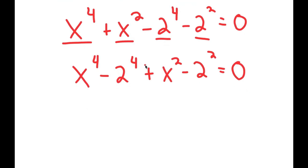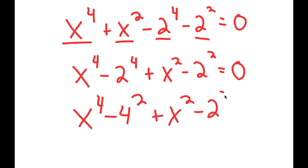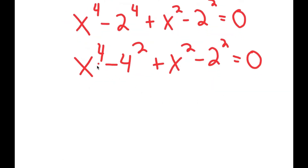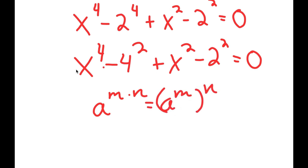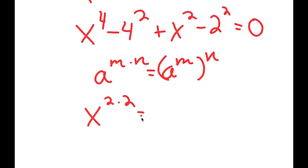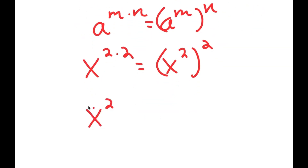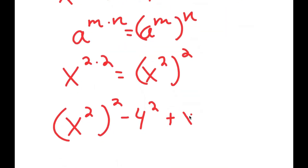Now, if I have something in the form a to the power of m times n, this is equal to a to the power of m to the power of n. So x to the power of 4 is the same thing as x to the power of 2 times 2, which is equal to x squared to the power of 2. So now I get x squared to the power of 2 minus 4 to the power of 2, plus x squared minus 2 squared, is equal to 0.